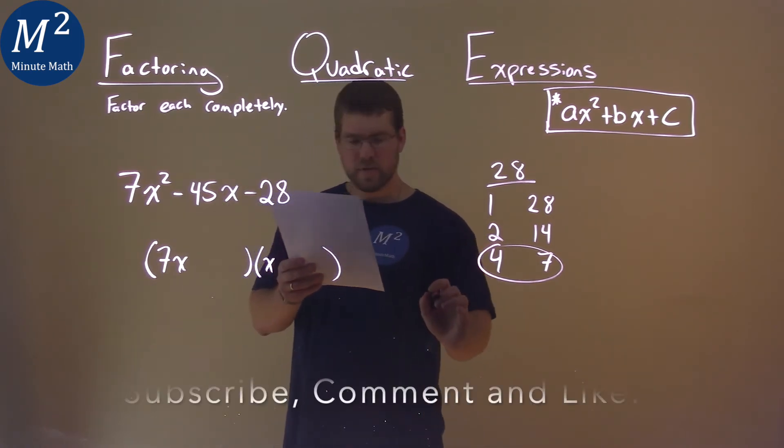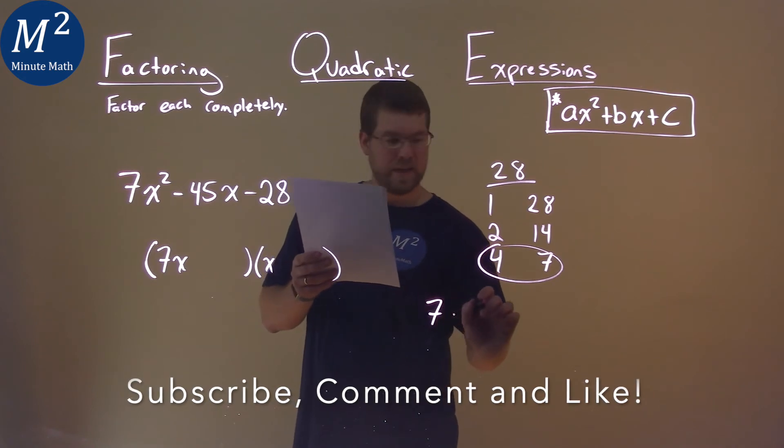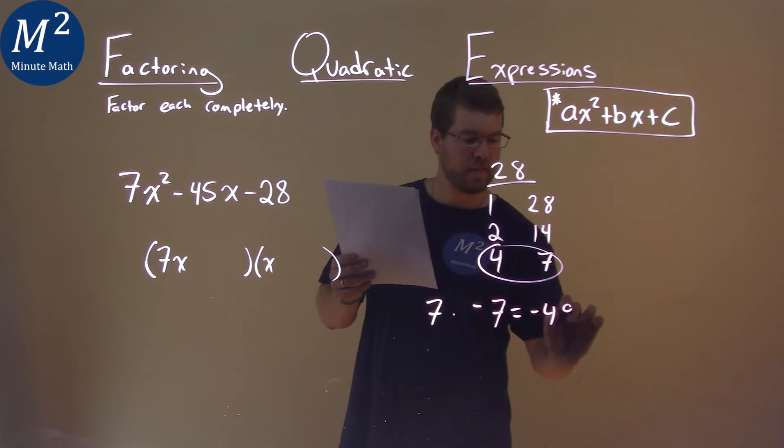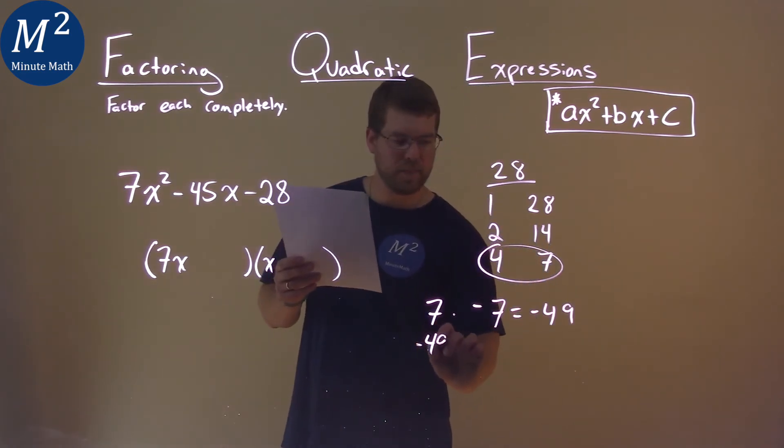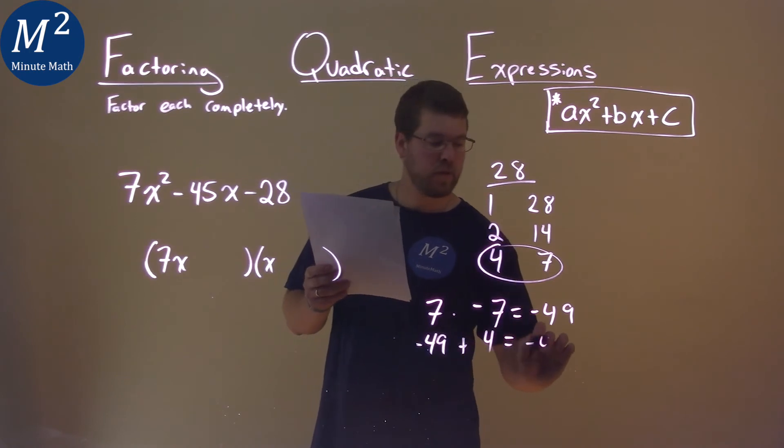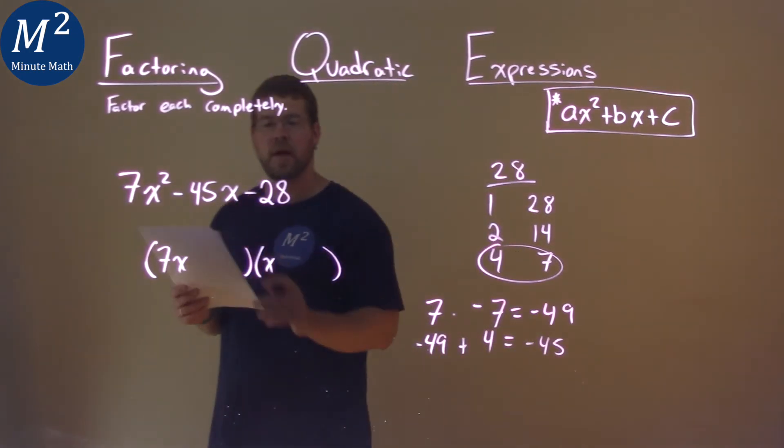So if 7 times a -7, if I make that one negative, that equals -49. I take that -49 and I add the other number 4, we get -45, the b value that we're looking for.